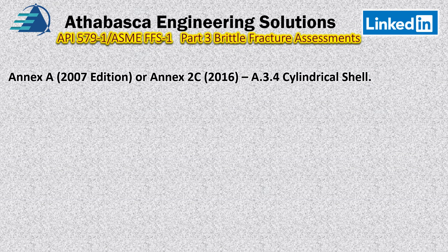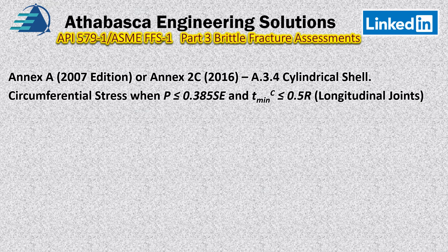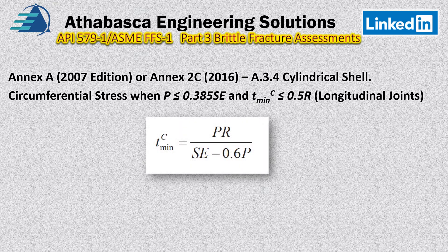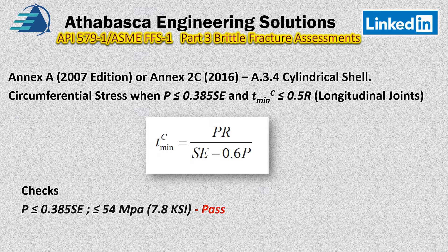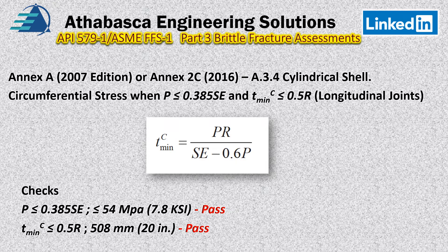With Annex A and Annex 2C in hand, we perform the circumferential and longitudinal stress calculations. There are criteria requiring that the pressure be less than 0.385SE and 0.5R to confirm we're following thin-walled stress theory rather than heavy-walled theory. We use the standard circumferential stress equation, perform our checks, and confirm that our pressure is well below 54 MPa and the thickness is within limits.